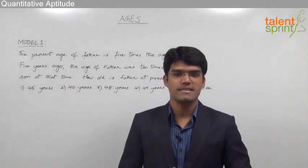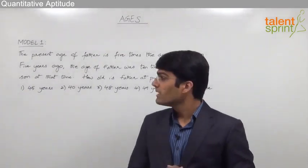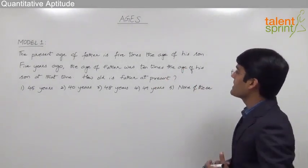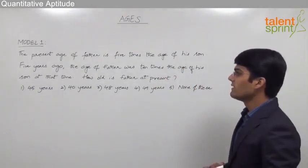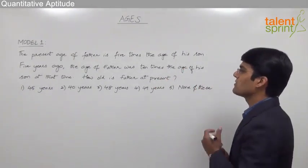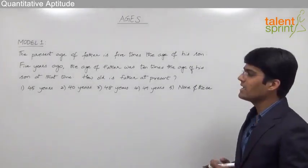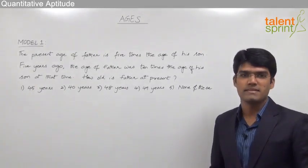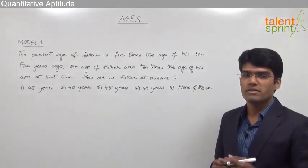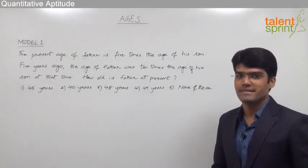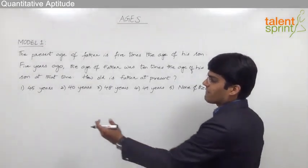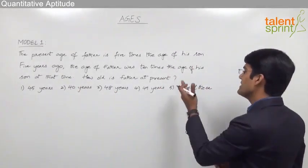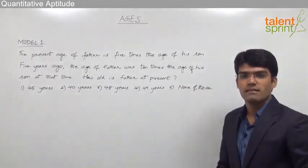Let us take the first model from ages. The question is: the present age of father is 5 times the age of his son. 5 years ago, the age of father was 10 times the age of his son at that time. How old is father at present? The given options are 45 years, 40 years, 48 years, 49 years, and the fifth option is none of these.